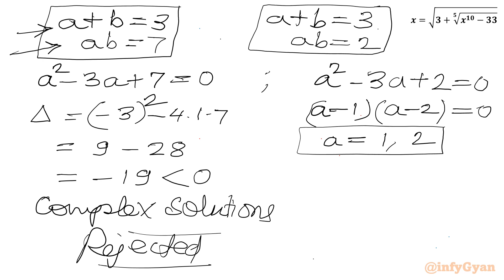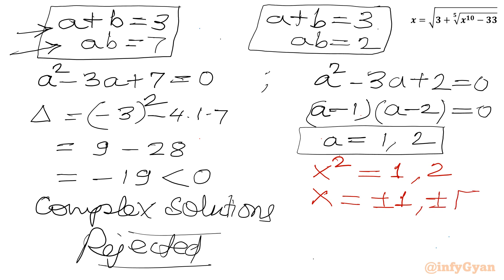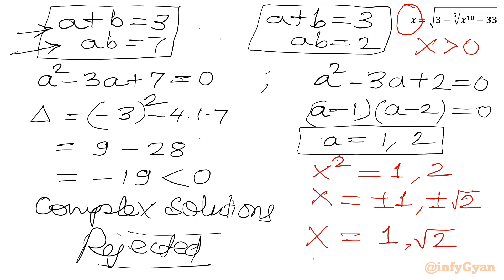Since a equals x squared, we have x squared equals 1 or x squared equals 2, giving x equals plus or minus 1 and plus or minus root 2. Applying our condition that x must be greater than zero, we reject the negative solutions. So the final real solutions are x equals 1 and x equals root 2. I hope you liked this video. Thank you for watching — don't forget to like, share, and subscribe. Bye bye!